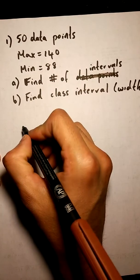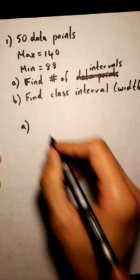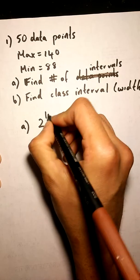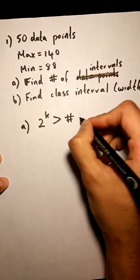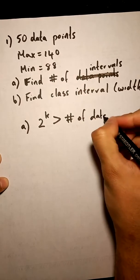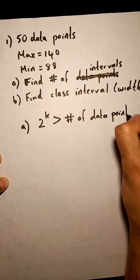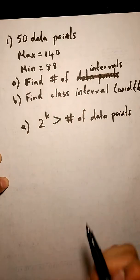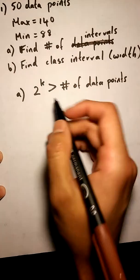To find the number of intervals, our formula is basically 2 to the power of k has to be greater than the number of data points. In this case, we know we have 50 data points, so we have to figure out 2 to the power of what number is greater than 50.